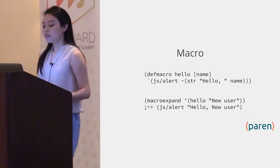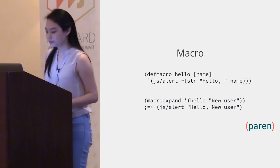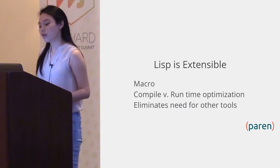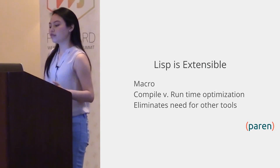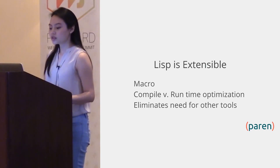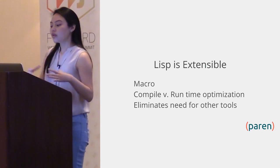Actually, much of ClojureScript the language itself is implemented using macros. You could also use macros to manage runtime versus compile-time optimization. For example, if you need to do an expensive operation like a network call during compile-time, you could write code to take care of that piece without sacrificing performance during runtime. With JavaScript, you would need to use Webpack for that. So ClojureScript is a lot more flexible, and you can leverage the language to do more without using a bunch of other tools.